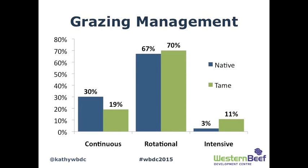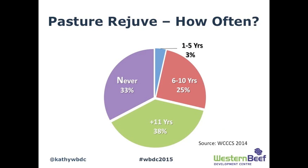On grazing management, most producers use rotational grazing systems — 67% on native pasture and 70% on tame pasture. 30% use continuous grazing on native, 19% on tame. 3% and 11% respectively use intensive grazing management. On pasture rejuvenation, one third of producers said they never do anything to rejuvenate their pastures, 38% said at least 11 years or more between rejuvenation efforts, one quarter every six to ten years, and 3% every one to five years.